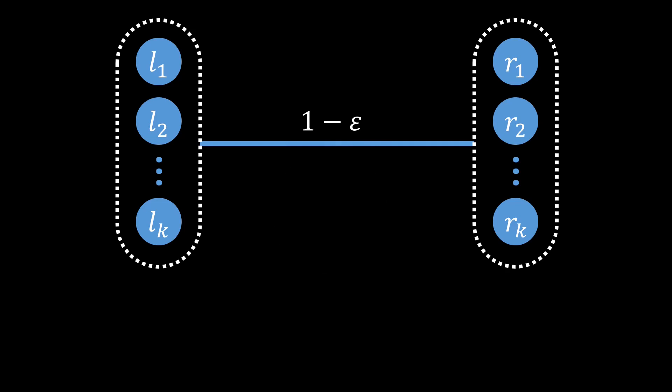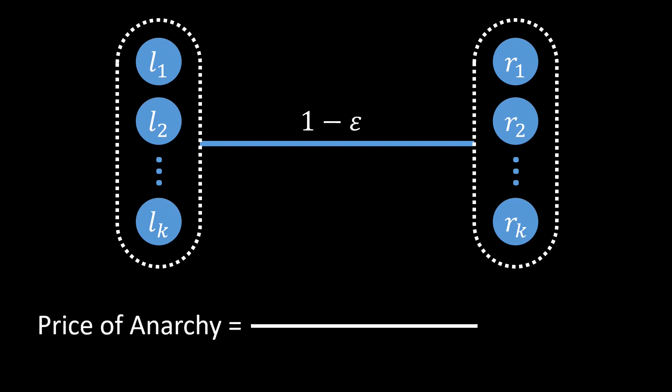When computing the price of anarchy, it is usually best to first compute the social optimum. In this case, the social optimum is simply 2. We cache the movie on one node in each city — this way all other nodes can access the movie from a node in their city with zero cost. Having more nodes cache the movie would only increase the total cost, and only one node caching the movie is also not good, because then all the nodes in the other city would have to fetch the movie from that one distant node. So two nodes, one in each city, is optimal.